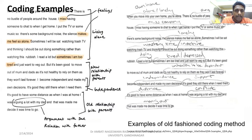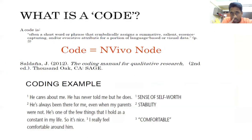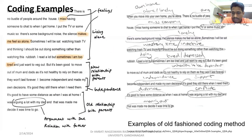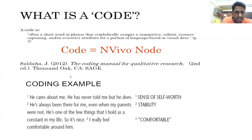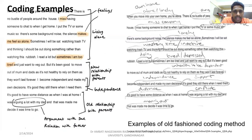Coding means you are ascribing to a particular statement — you are trying to capture what is the essence of a particular experience, the meaning of a particular sentence or paragraph. As a researcher, you are going through the entire data that you have collected. You are trying to come up with various codes based on your understanding of the data. For example, the statement 'He cares about me. He has never told me, but he does.' — as a researcher, reading this text collected as part of your research work, while familiarizing yourself, you start underlining concepts.